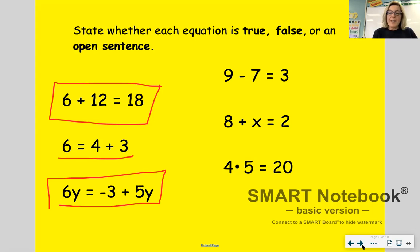9 minus 7 equals 3. While it's an equation, it is a false equation because 9 minus 7 is equal to 2.